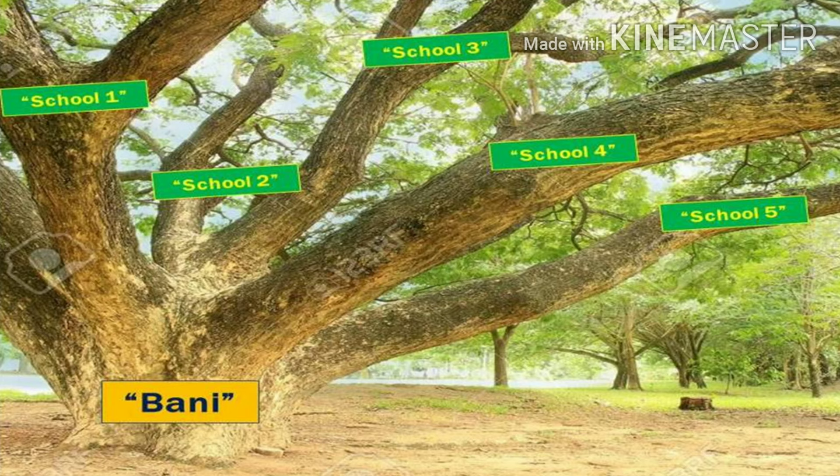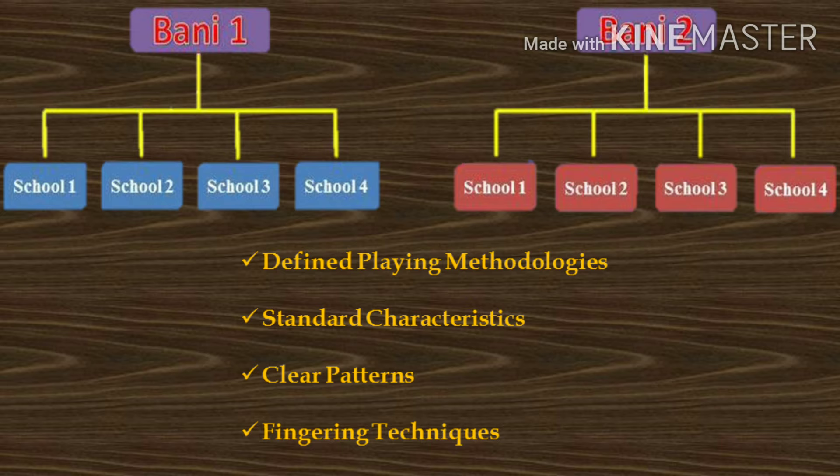There shall be multiple schools under a Bani, like multiple branches in a tree, and multiple followers or disciples, like multiple leaves in the branches. Further, a Bani needs to have some kind of uniqueness — defined playing methodologies, standard characteristics, clear patterns, fingering techniques, and so on.